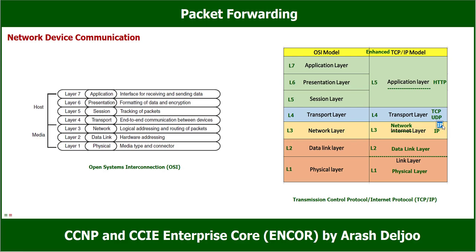We know about the network layer and protocols like ICMP and IGMP. In the network layer we have two main functions: the first is addressing and the second is routing — logical addressing and routing of packets. You have learned about these functions in CCNA, and in this class you will learn more about routing and addressing.